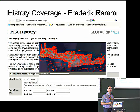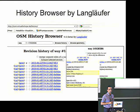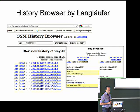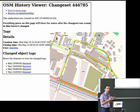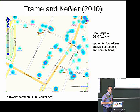Frederick Ram has the history coverage service, which allows you to build animated GIFs of how history is changing in different places. The history browser is a nice tool that shows ideas for comparing previous versions in a text format with hyperlinks to various web services. The changeset viewer is another way to explore the history of objects, though you really need to know what a changeset is to get value out of it.